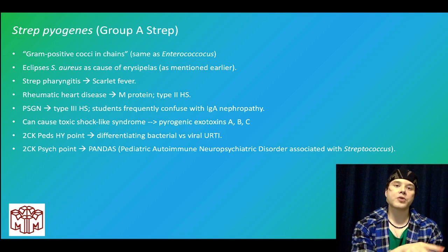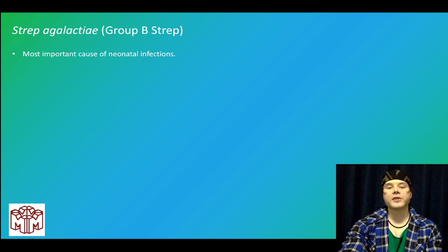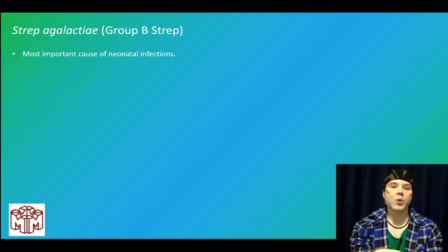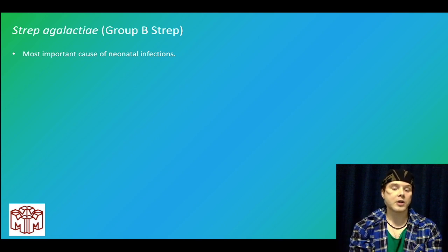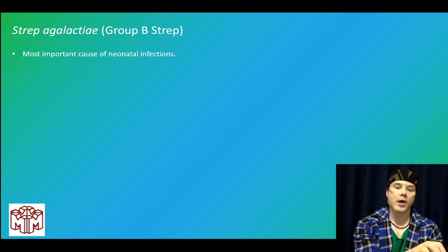Strep agalactiae, group B strep, is a really important cause of neonatal sepsis, meningitis, and pneumonia. If they give you a neonate with meningitis but the lab says gram-positive rods, that's listeria. If they say gram-negative rods, think E. coli. So: neonatal infections — gram-positive cocci is group B strep, gram-positive rods is listeria, gram-negative rods is E. coli.